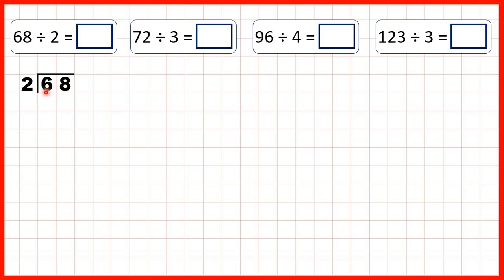So first we need to divide the 6 that's in our tens. Now 6 is in the 2 times table, so what we can do is write 6 below. And because 6 is 3 times 2, we can write 3 in our answer line. Now we subtract and bring down, but 6 minus 6 is 0, so all we need to do is bring down the 8.